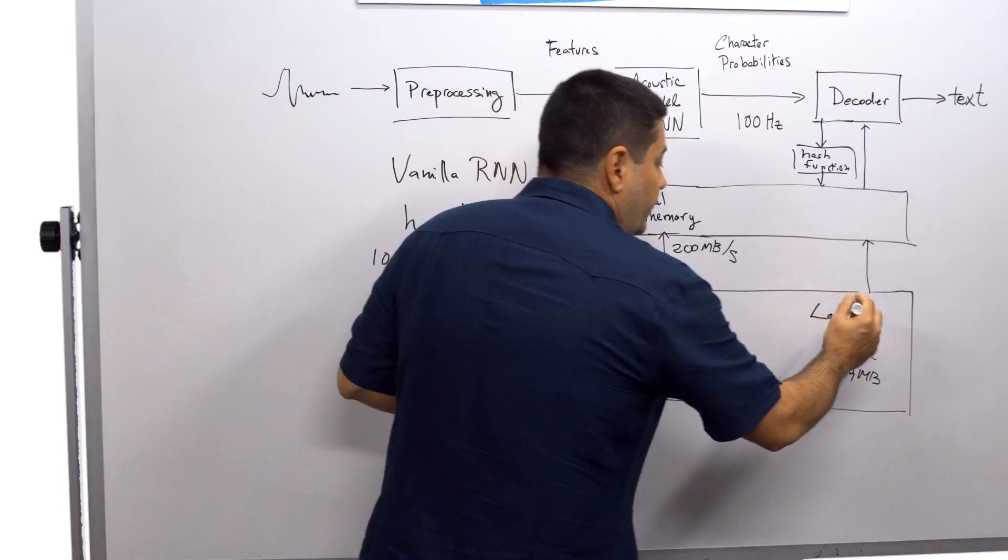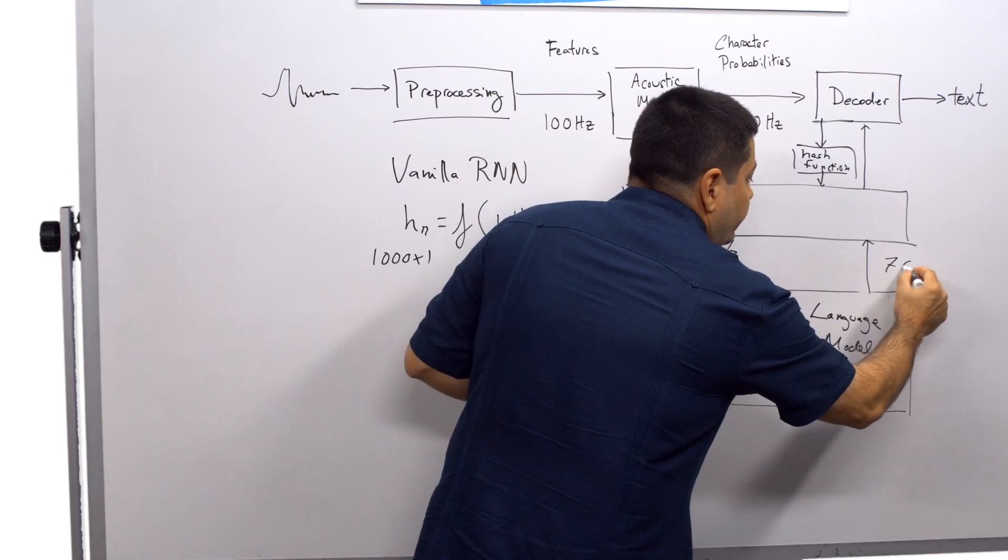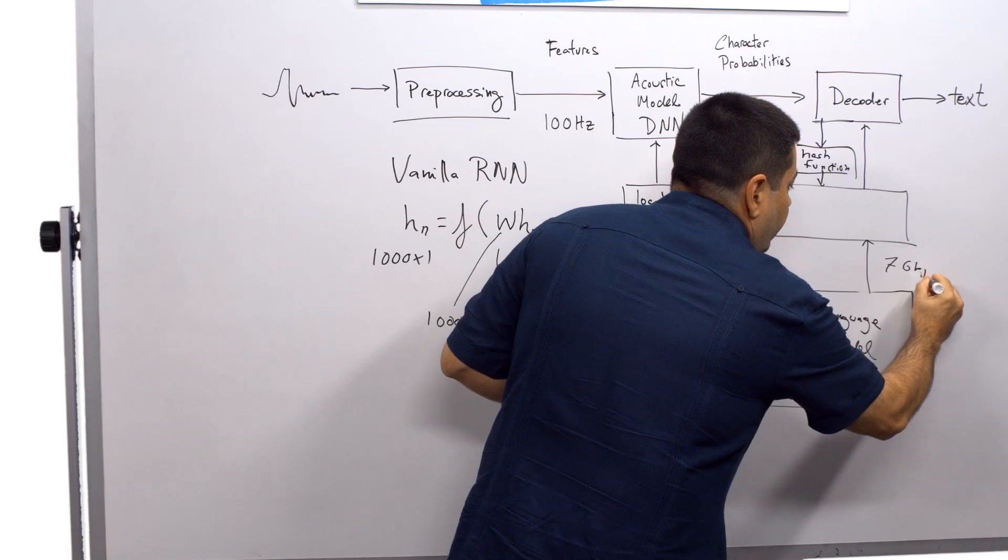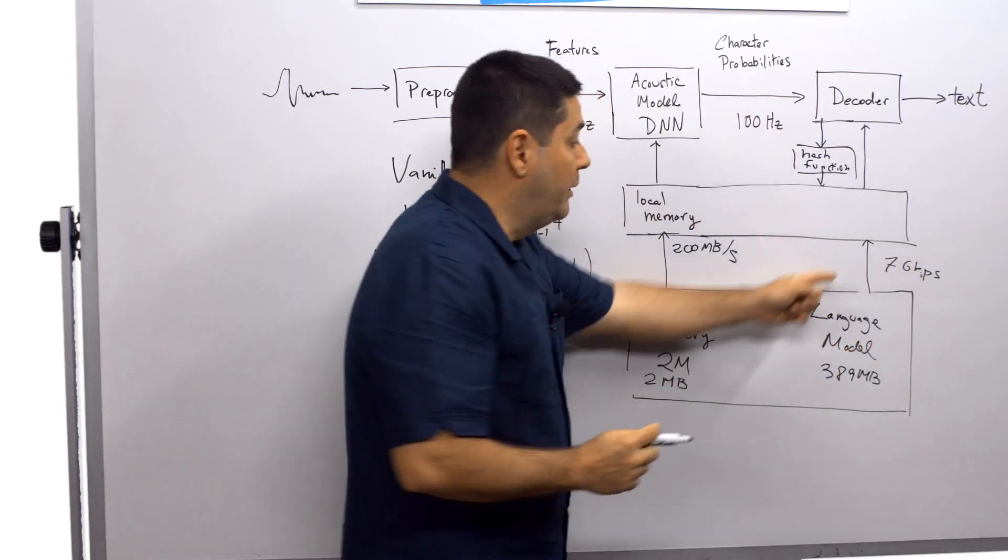So we've measured for this example, we have about 7 gigabits per second of memory access bandwidth.